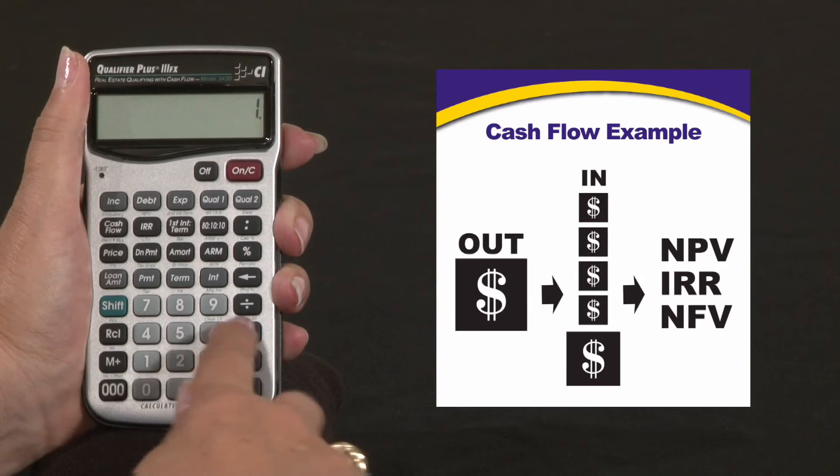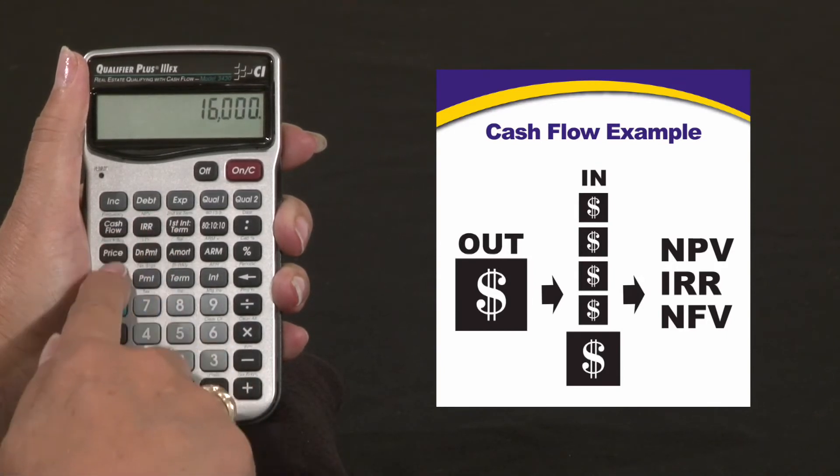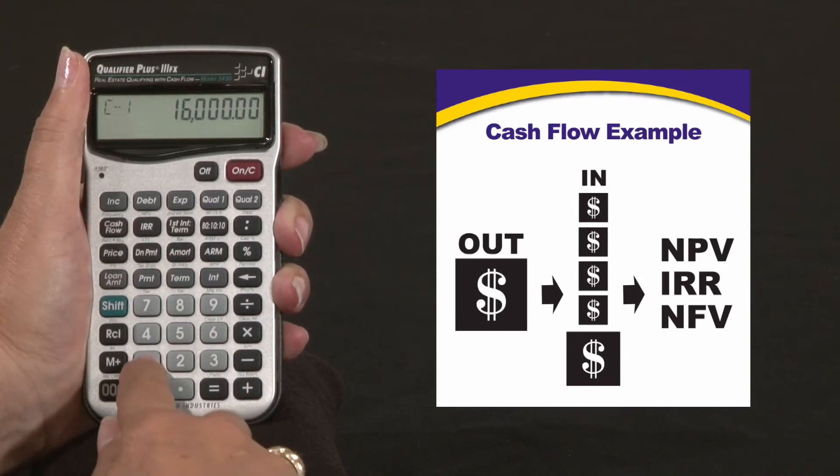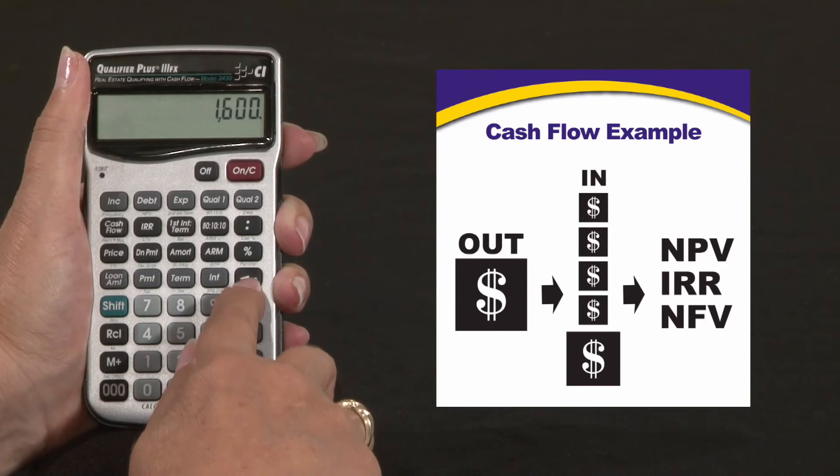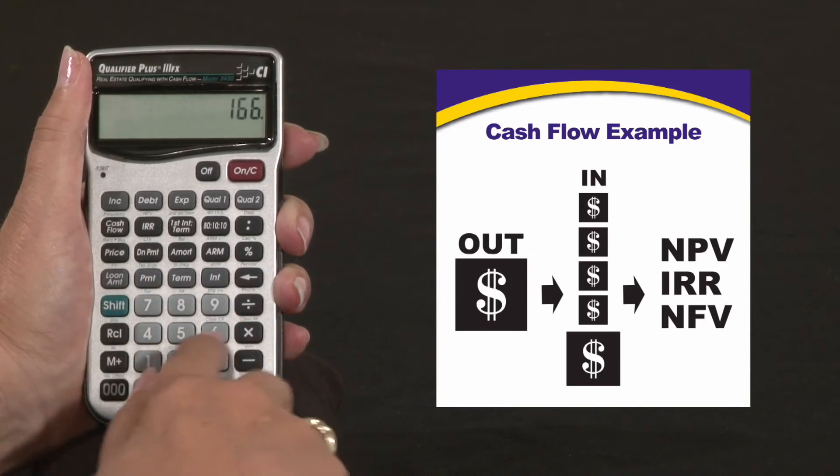Now his first yearly income is $16,000. His second year he's going to get $16,000. And see, I missed $6,000 so we're going to back it up. $166,000.